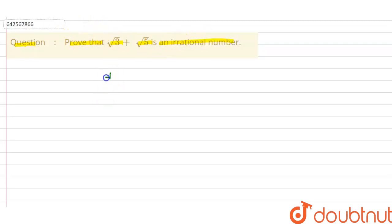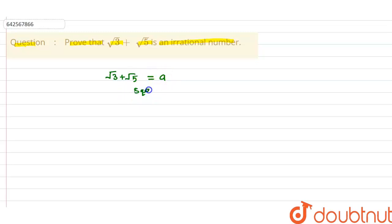To prove this, let us assume √3 + √5 is a rational number, that is equal to a. Now we square both sides.